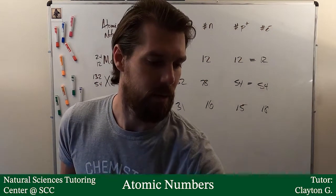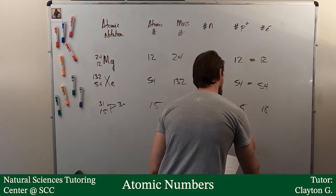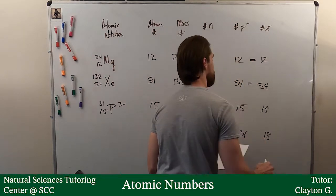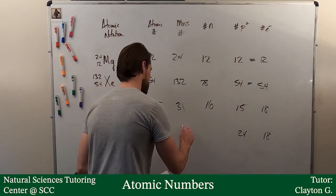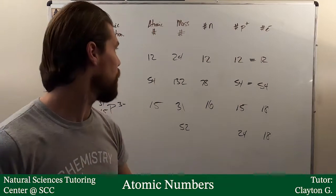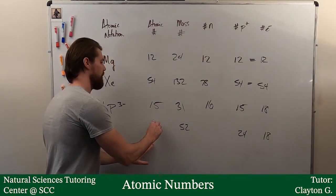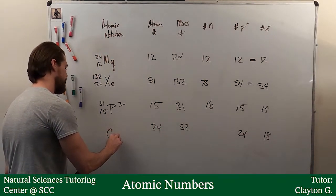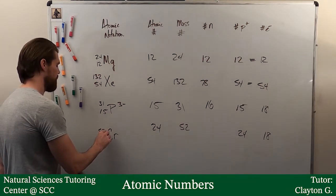Last one here, we are given 24 protons, 18 electrons, and a mass number of 52. All right. Well, once again, the easiest thing, if I know the protons, I know the atomic number, 24. I'll look at a periodic table, it tells me that is chromium. So I can put 24 and 52 here.